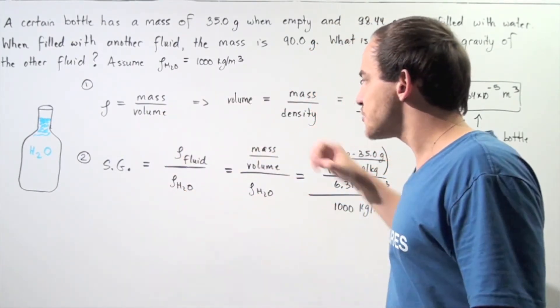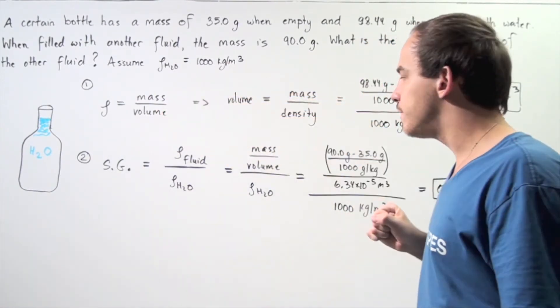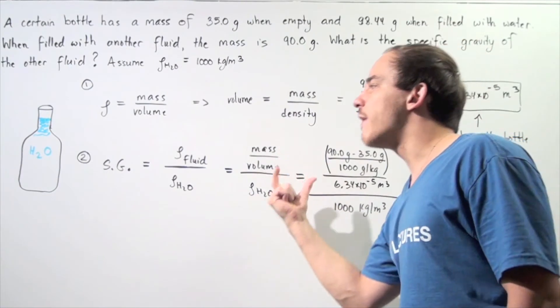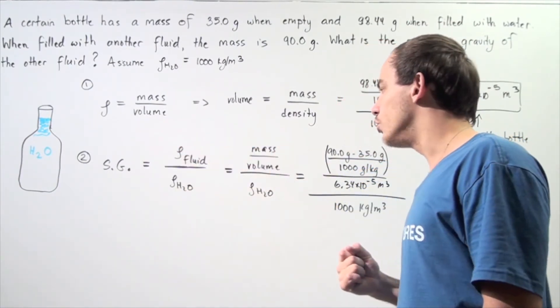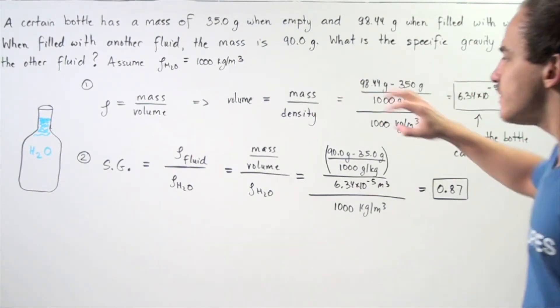So, the density of the fluid to the density of water, well, we know what this quantity is. But this quantity is simply the mass of that second fluid divided by the volume that the bottle can hold. So, we know what the volume of the bottle can hold. That was found in part 1.